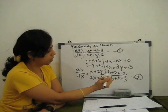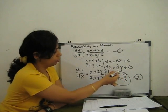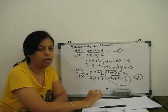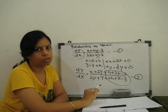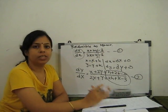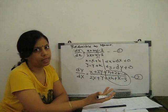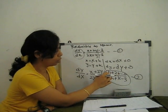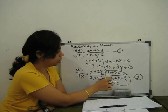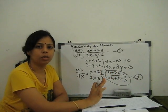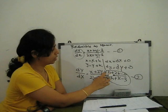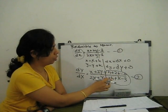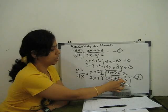The next step is to find the values of h and k. We want values of h and k that make the constant terms equal to zero. So we set h + 2k − 3 = 0 and 2h + k − 3 = 0. That way, when we substitute, both constant groups vanish.